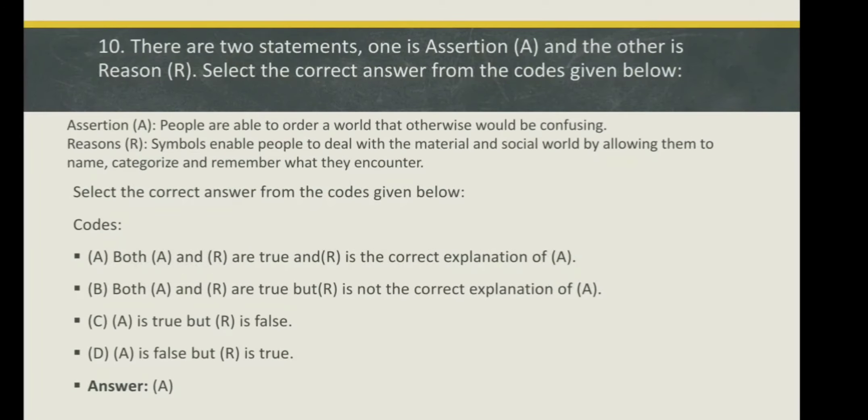There are two statements. One is assertion and the other is reason. Select the correct answer from the codes given below. Assertion: People are able to order a world that otherwise would be confusing. Reason: Symbols enable people to deal with the material and social world by allowing them to name, categorize and remember what they encounter.